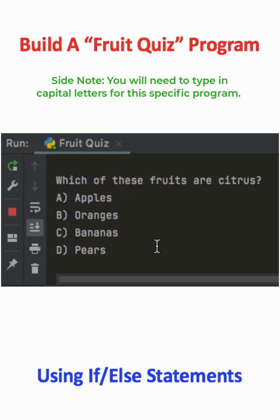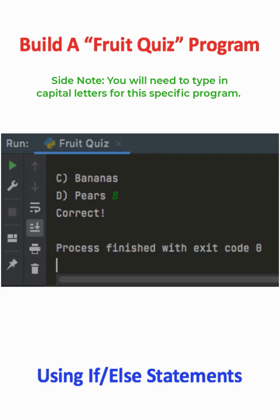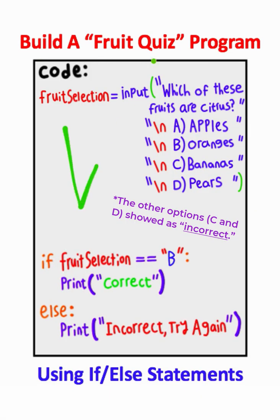So if I run this program again, this time I'm going to try typing in B for oranges. And that tells us that we are correct. So this program was successful.